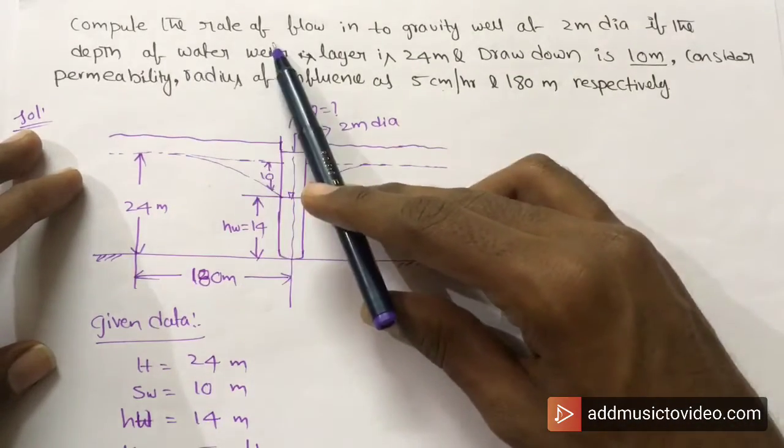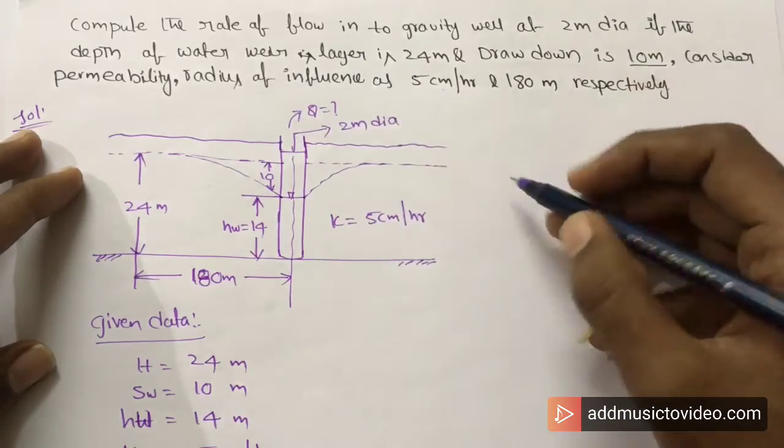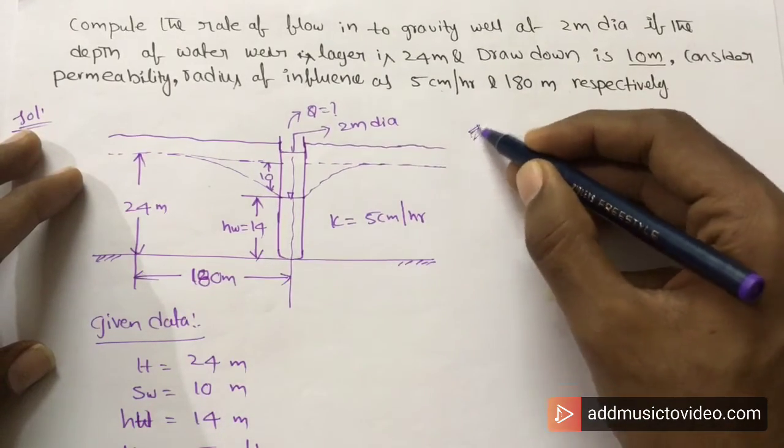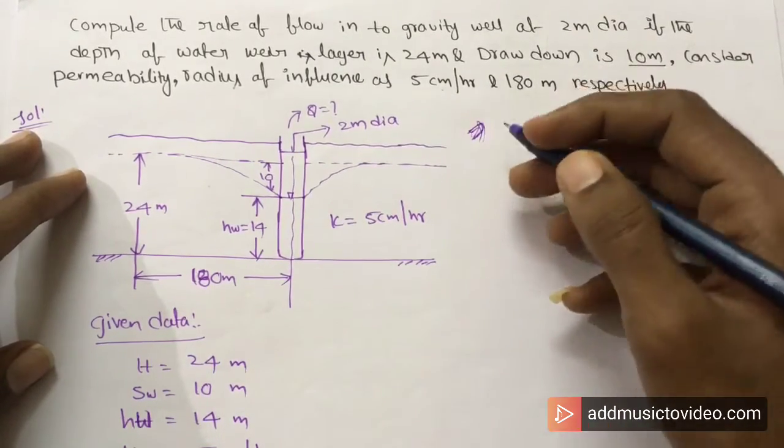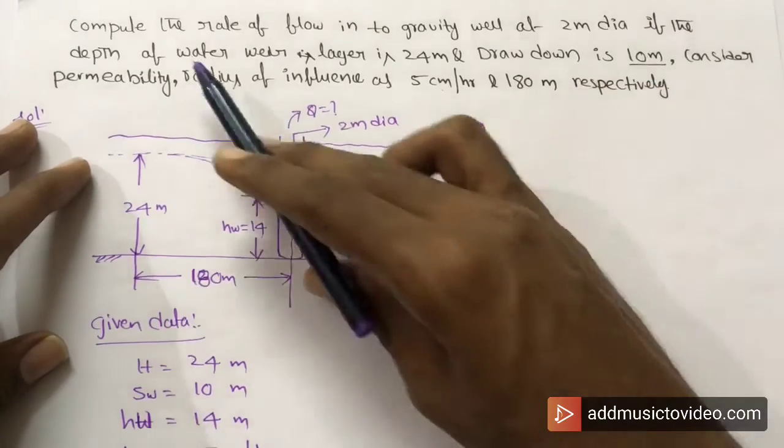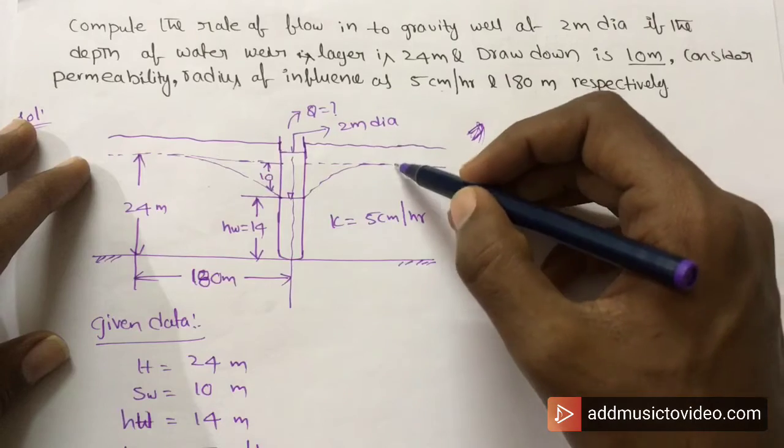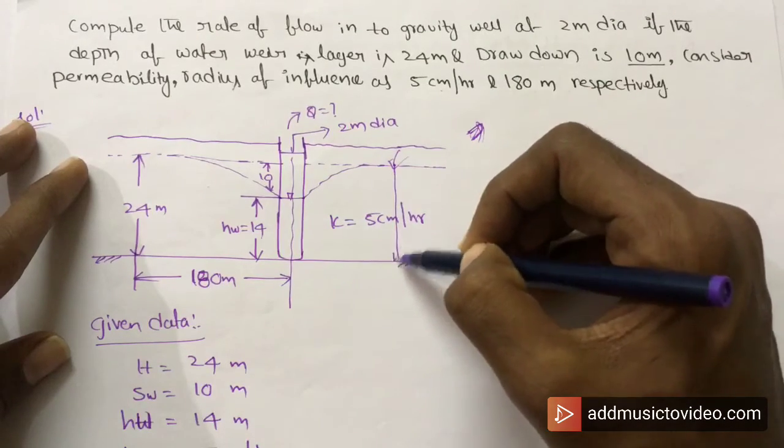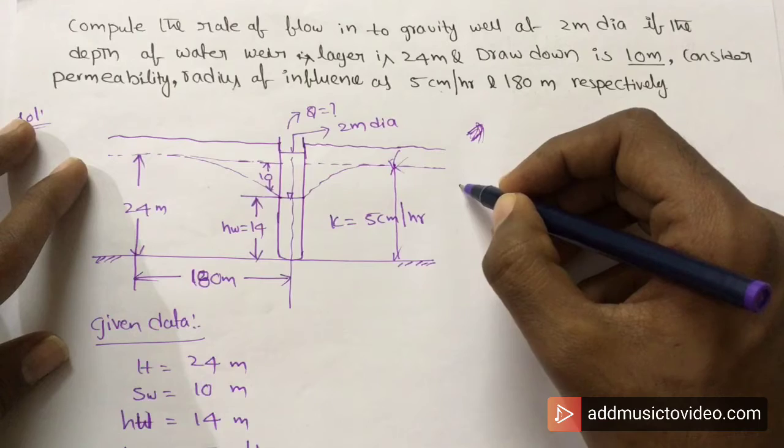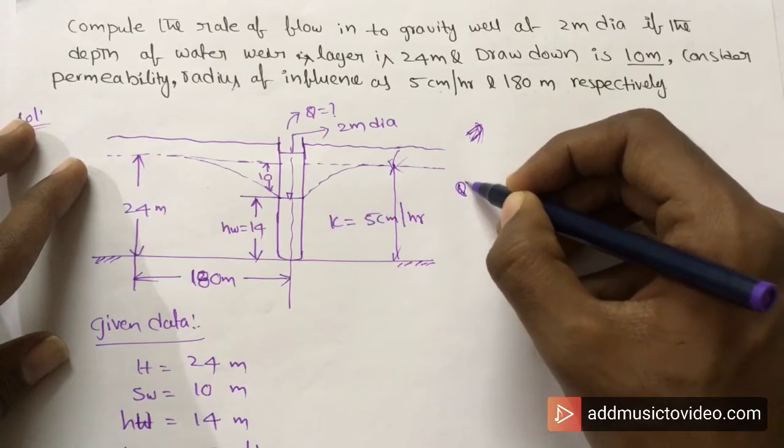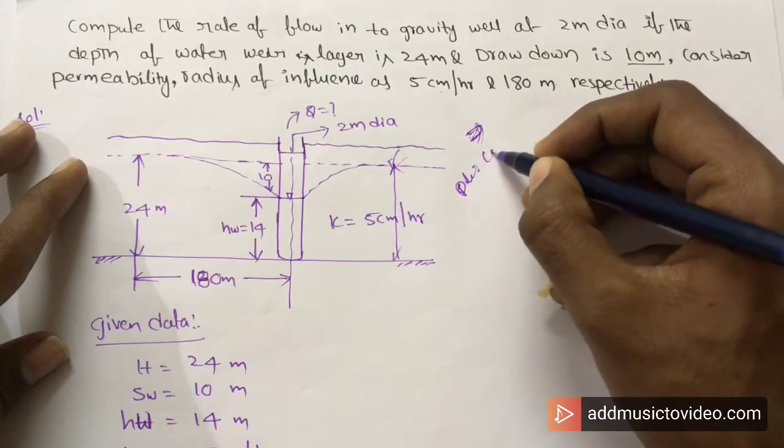Compare the rate of flow into a gravity well. In unconfined aquifers, we consider the actual water level, while in confined aquifers there is a piezometric level.